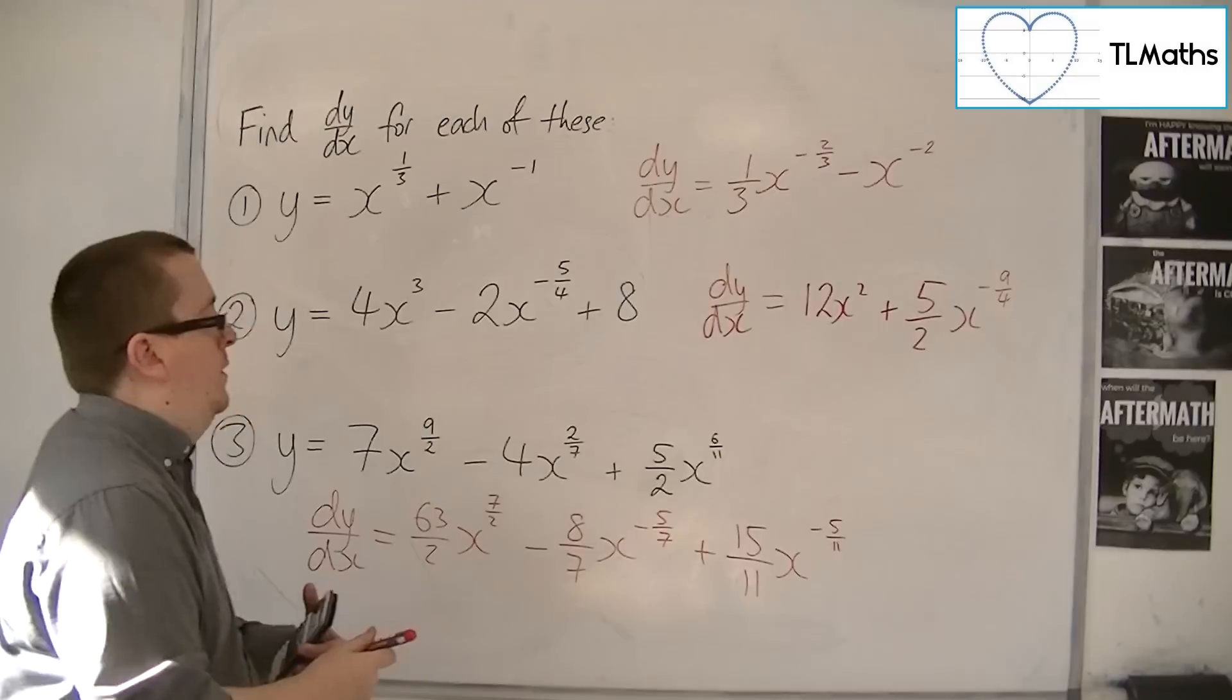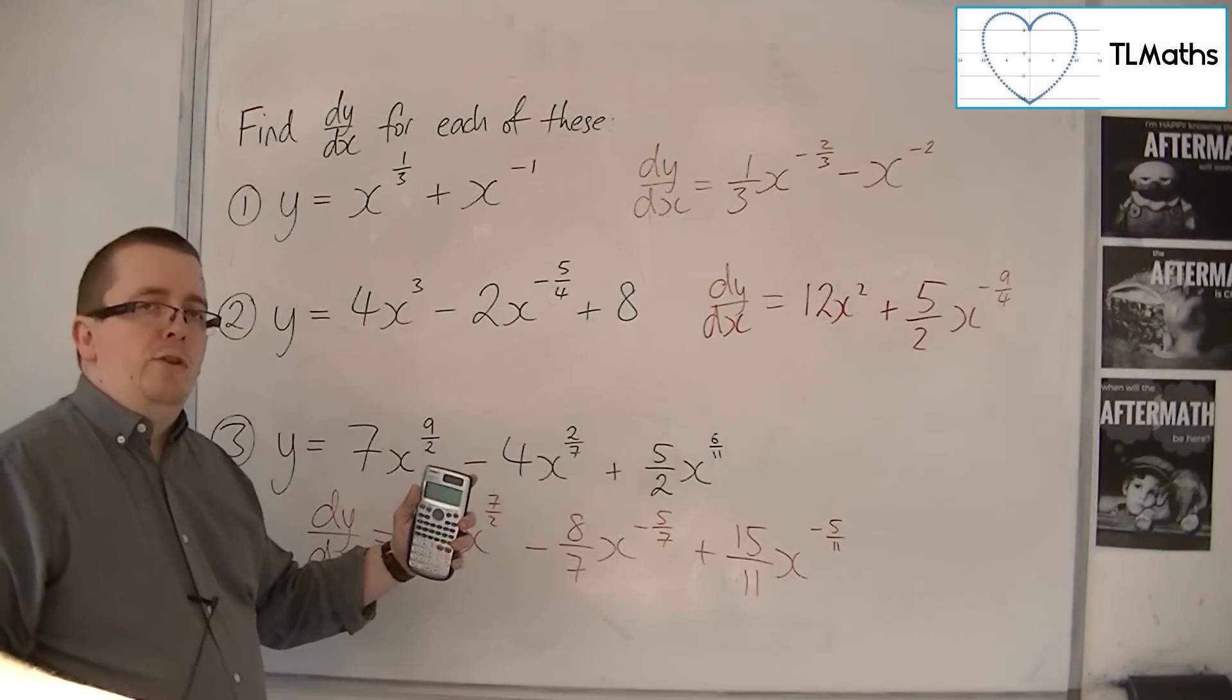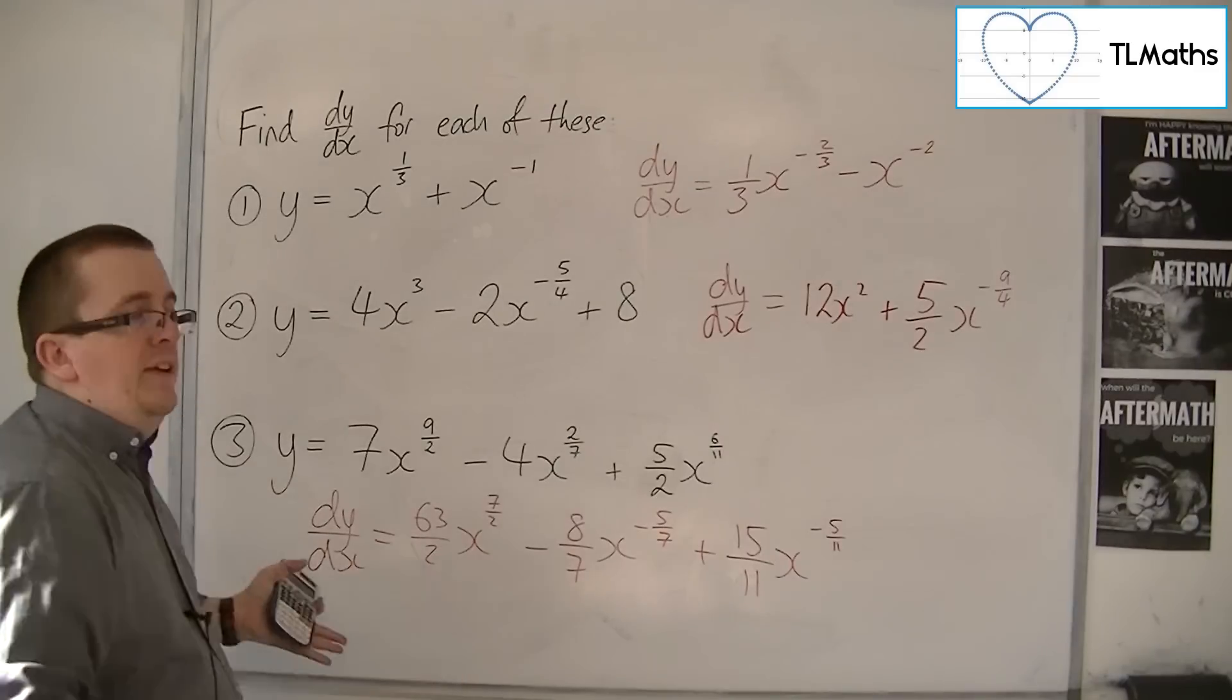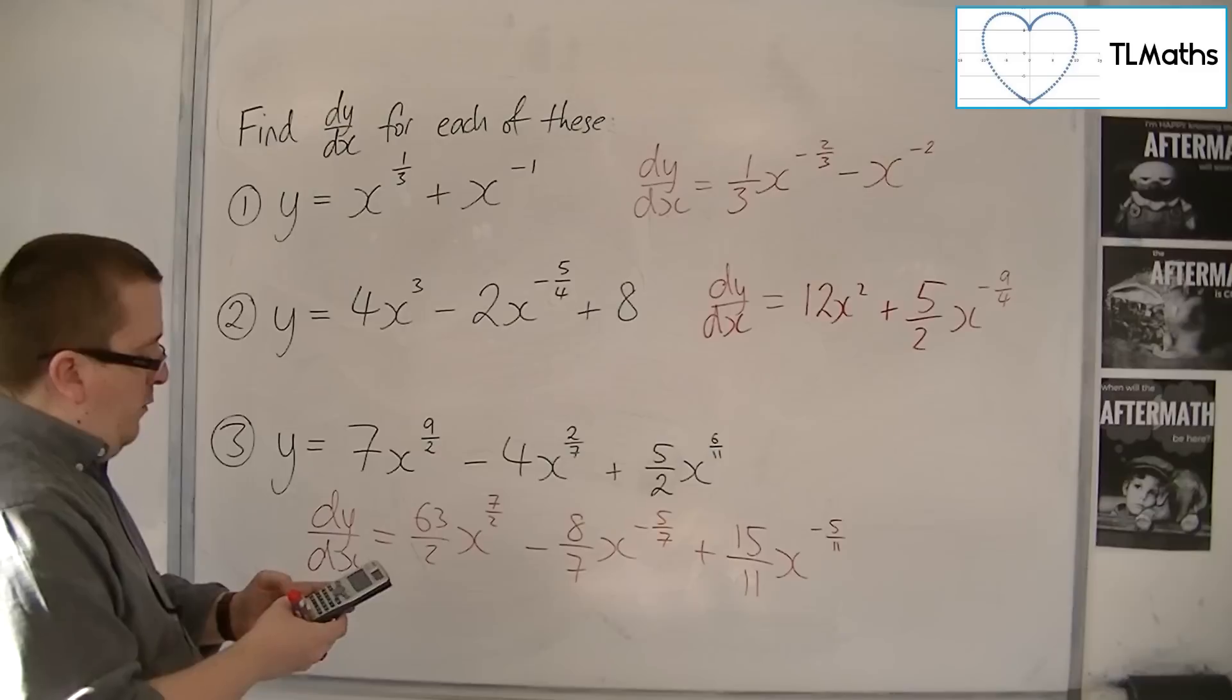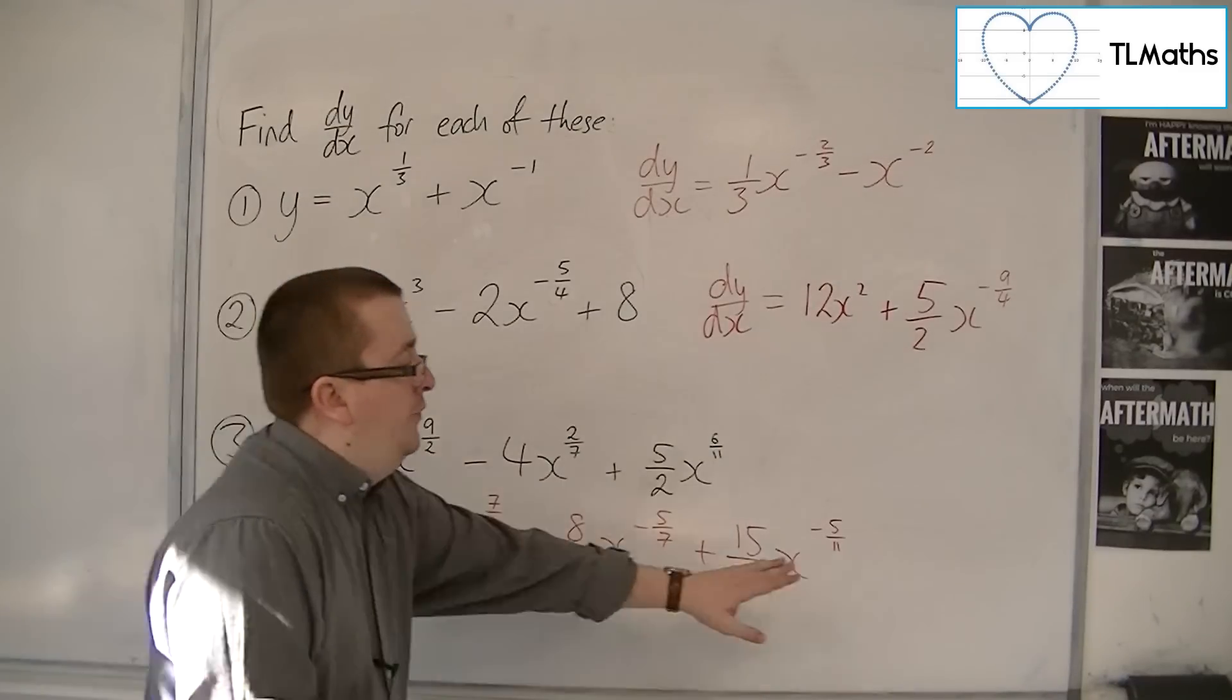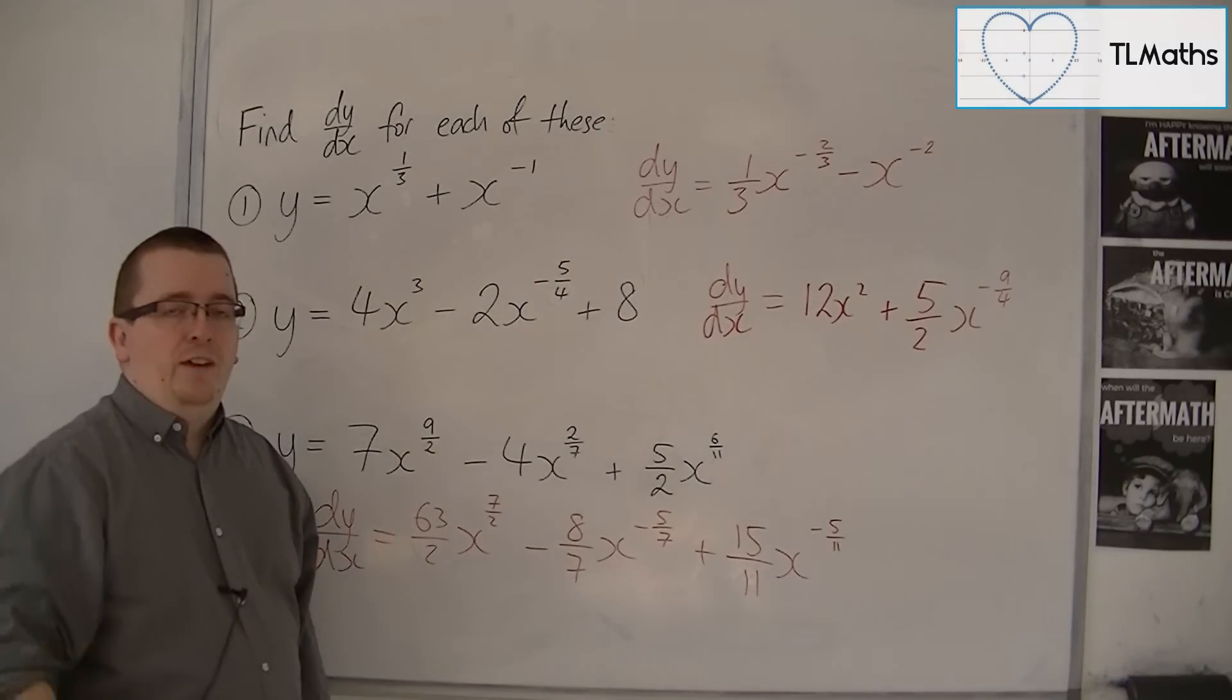Okay, so to check, make sure you use your calculator just in case. Because you don't want to make a silly mistake with indices in the exam. So even though you may well be fully confident, you might want to check, write six-elevenths take away one, and that gets to be minus five-elevenths. So don't be afraid to check using your calculator.